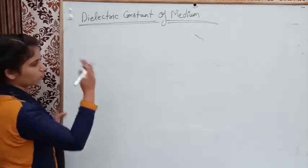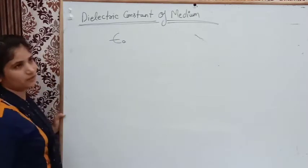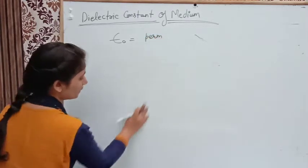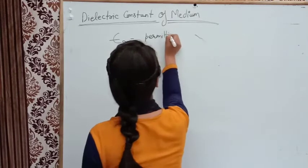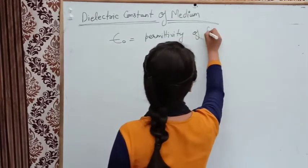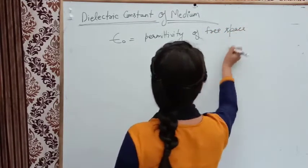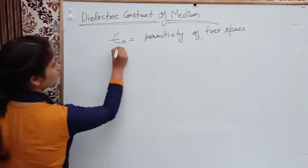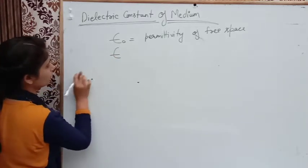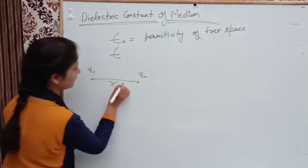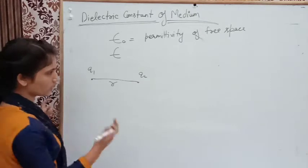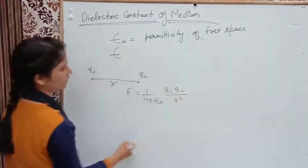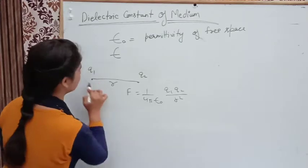Remember that in some videos we have studied epsilon naught. Its value is 8.85 into 10 to the power minus 12 — this is the permittivity of free space or vacuum. If our system has two point charges Q1 and Q2 separated by distance R and we keep them in free space, we write: F equal to 1 upon 4 pi epsilon naught Q1 Q2 upon R square.